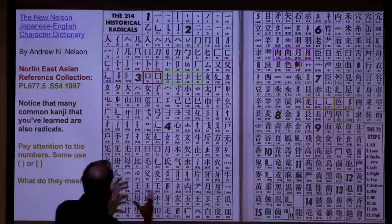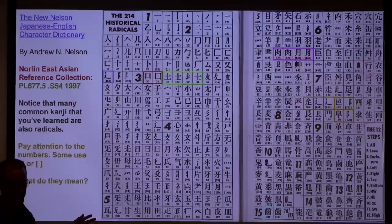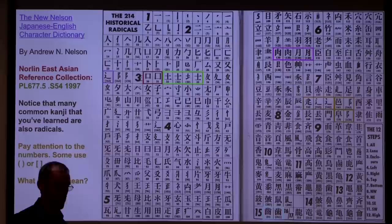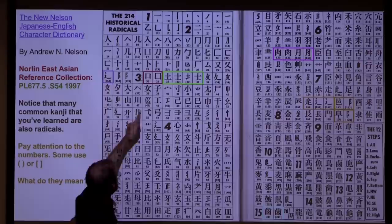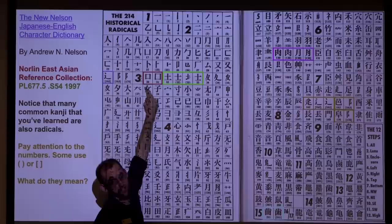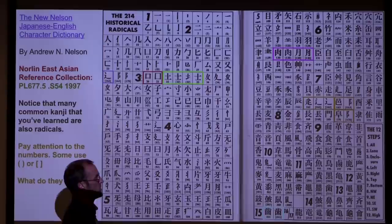If you look at the red squares, C30 and 31: radical 30 is 'kuchi,' the mouth radical. Radical 31 — one of the first kanji you learn, but it's missing something inside — is the country radical, 'kuni.' It's a 'kamae,' an enclosure radical. The difference is that with 'kuchi,' you can never put anything inside of it, but with the country radical, you always put something inside. That's what distinguishes them — a convention that doesn't make sense at first, but makes a lot more sense when you see how they're used.